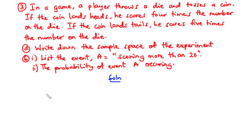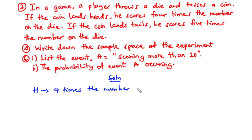From the question, we are told that a player throws a die and tosses a coin. Now if the coin lands heads, he scores four times the number on the die. And if the coin lands tails, he scores five times the number on the die.